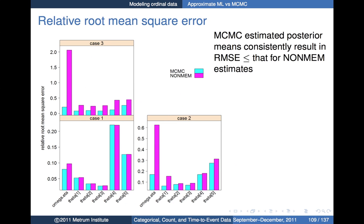We can also talk about precision, not just bias. Looking at the relative root mean square error: MCMC results are shown in cyan and NONMEM in magenta. In case one there isn't much difference between the two cases.